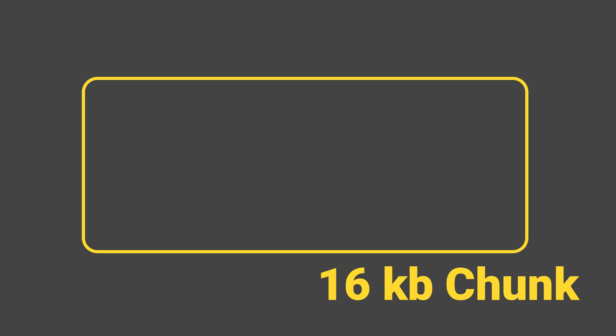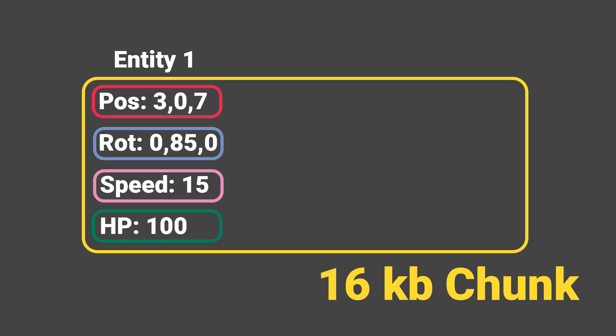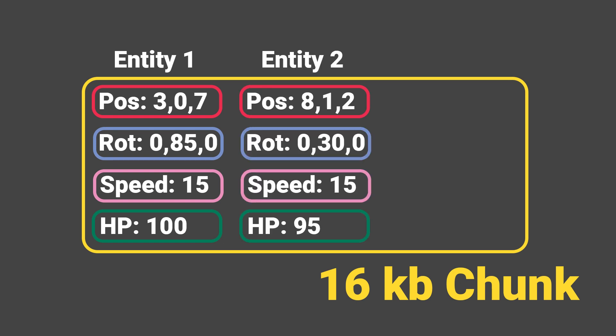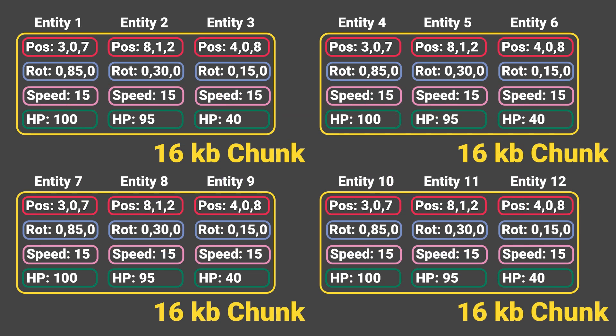This block of unmanaged memory is exactly 16 kilobytes in size and holds all the actual data values for components of our entities. So if we have an entity with a position, rotation, move speed, and health component, all the data values for those components are stored within that same 16 kilobyte block. If we add more entities with those exact same components, they're all populated into that block until the full 16 kilobytes is filled up.